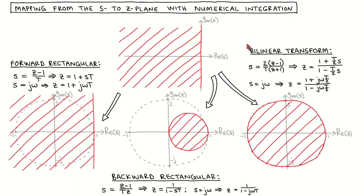When using the bilinear transform for discretization, we replace every occurrence of s in the controller transfer function with 2 over T times z minus 1 divided by z plus 1, which results in the mapping z equal to 1 plus T over 2 times s, divided by 1 minus T over 2 times s. The imaginary axis is mapped to the unit circle in the z-plane, with the stable region of the s-plane mapped to the inside of the unit circle. Stable poles in the s-plane will always be mapped to stable poles in the z-plane, and unstable poles will always be mapped to unstable poles.